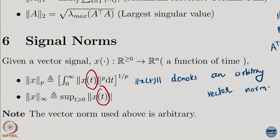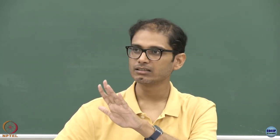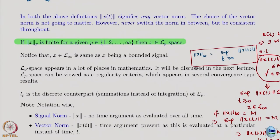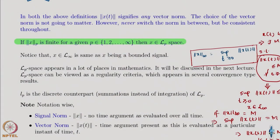In all the above definitions, the choice of vector norm does not matter, but never switch norms — be consistent. Whenever a P signal norm is finite, we say that the signal belongs to LP space. Signal norms actually define a rather large class of functions called LP space, which has significance not just in control — it has significance in a much wider area of mathematics.